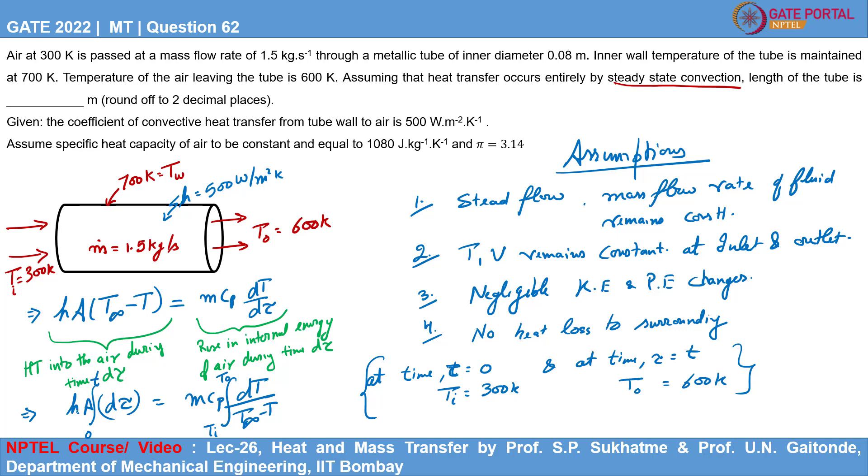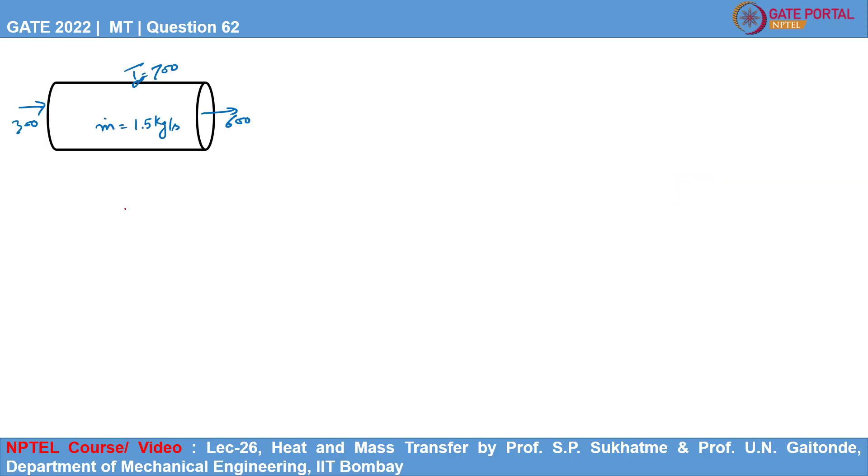Since coefficient of convective heat transfer and the area are constant, so they can be kept outside the integral. Likewise, the mass flow rate of air and specific heat of air are not changing with temperature. Hence, they can also be taken outside the integral. Now, upon further simplification, we can see area, it is pi d L, that is the surface area of the cylinder, cylindrical tube.